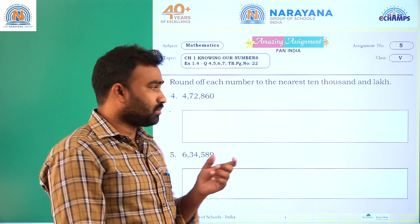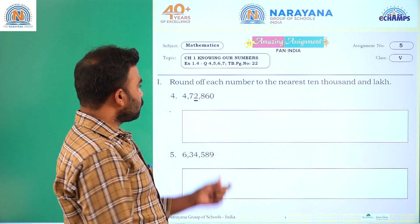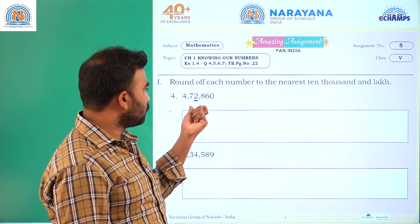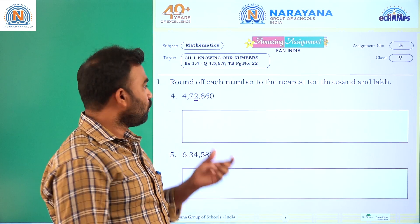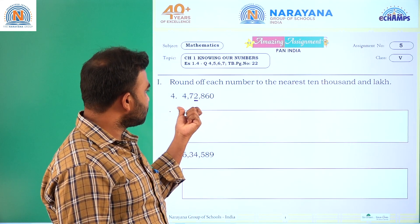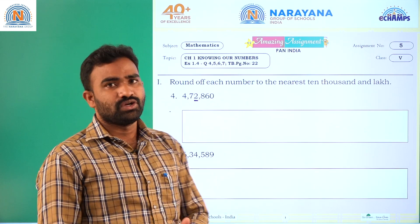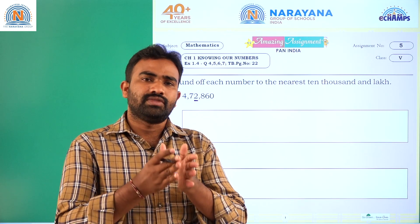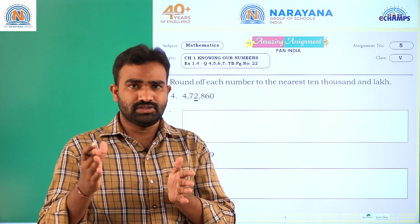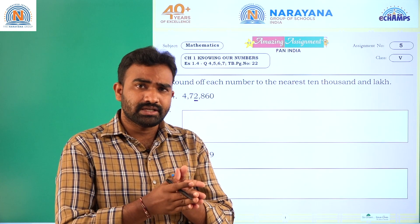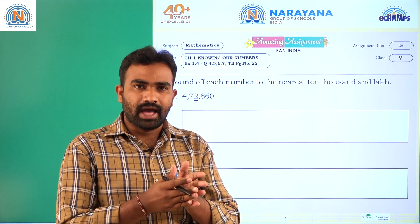Here, the thousands place is two, so we make two as zero, eight as zero, six as zero, and the last zero stays zero — giving us four lakh seventy thousand. To round off to the nearest lakh, we check the ten thousands place. If it is less than five, we make all remaining places zero. If it is five or greater, we add one to the lakhs place.